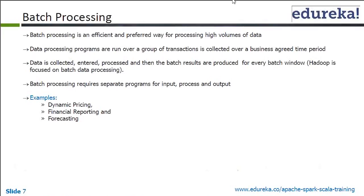If there are any forecasts or targets which you have to set, they have to be updated before the next business day starts. The best way to do that is to take all of the transactions which happened in a day — you don't need to do this again and again during the day. You do it once, in between when today's business day ends and before the next one starts. This is batch processing.